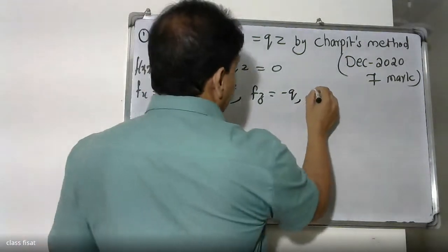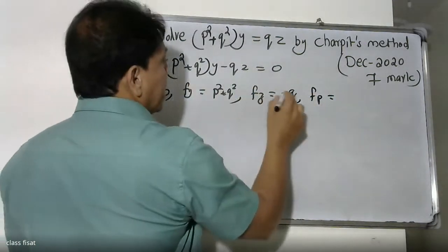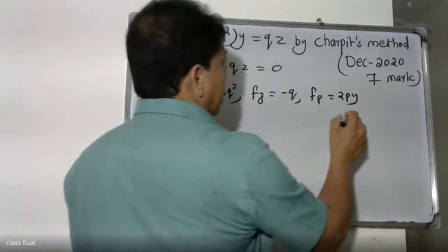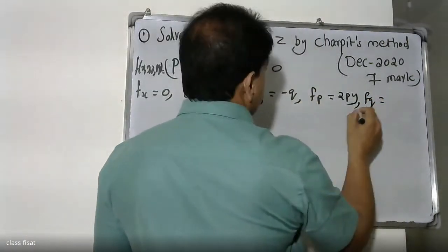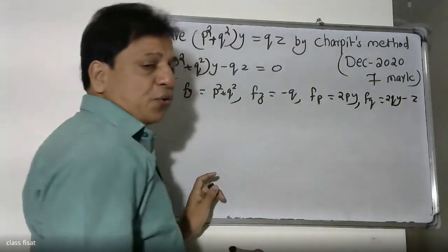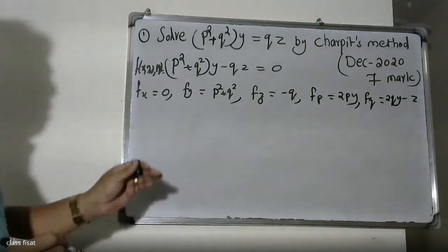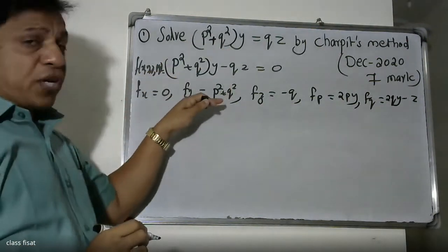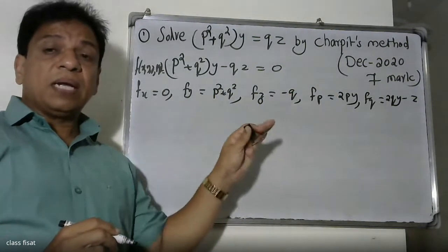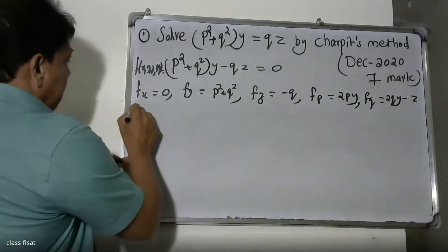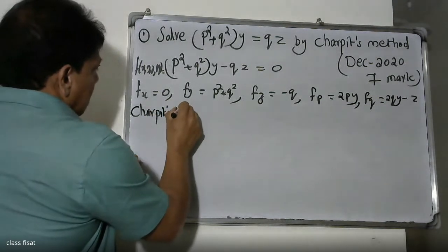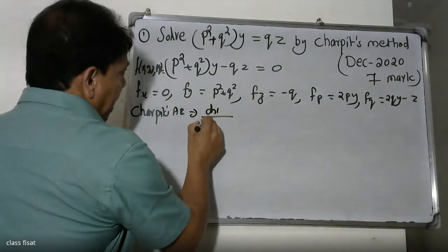Continuing the partial derivatives: Fp is equal to 2py. FQ is equal to 2QY minus Z. These are the required partial derivatives we will substitute into Charpit's auxiliary equations.